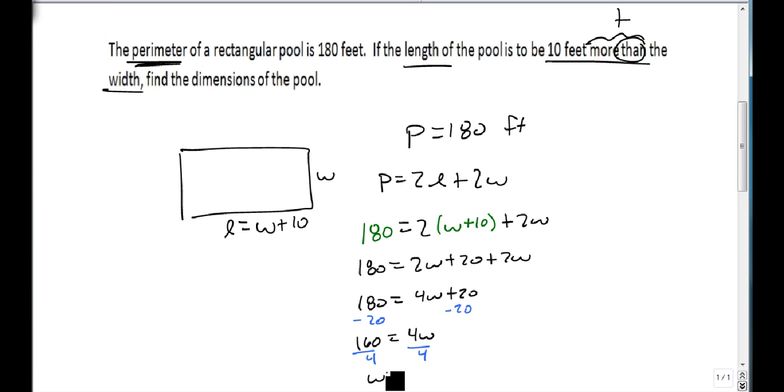We'll switch our order now. W is 40, or suggested to be 40 feet. Well, if W is 40, then we can come back here. We can plug it in. This is 40 plus 10, which is 50. So it says my length would be 50, and my width would be 40.